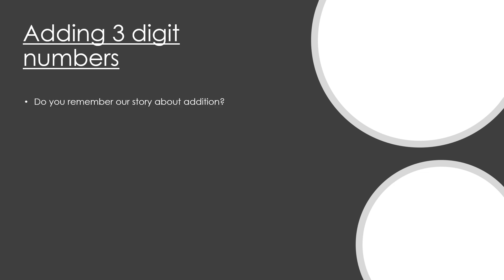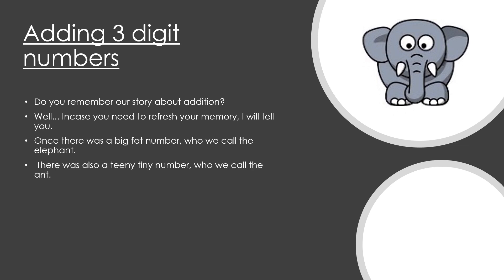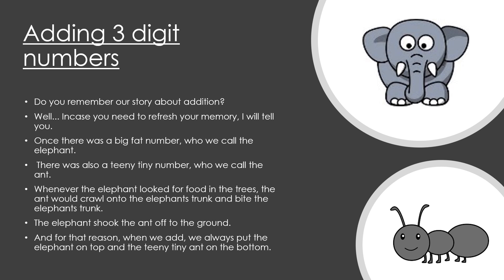Adding three-digit numbers. Do you remember the story about addition? In case you need to refresh your memory, I will tell you. Once, there was a big fat number, who we call the elephant. There was also a teeny tiny number, who we call the ant. Whenever the elephant looked for food in the trees, the ant would crawl onto the elephant's trunk and bite it. The elephant shook the ant to the ground. And for that reason, when we add, we always put the elephant on top and the teeny tiny ant on the bottom.